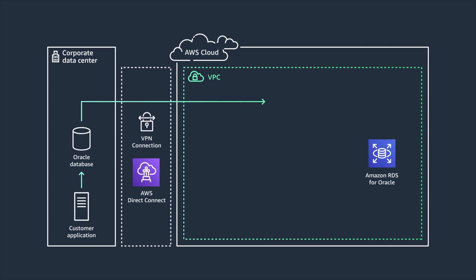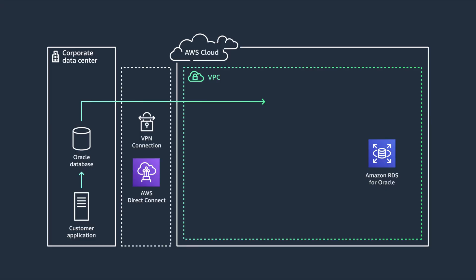You can consider this form of offline database migration when service downtime is not a primary concern. Under this option, database updates are least frequent with test and development applications. You can stop application writes to the source database to avoid any unexpected changes. You can also choose to use a server instance in the corporate data center to export database configuration files and data. I recommend using an Amazon EC2 instance due to the options to optimize cost and performance. Using the native database tools, you can restore data to the target Amazon RDS cluster.